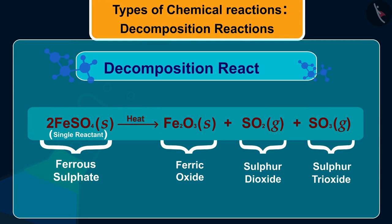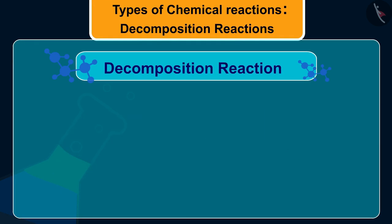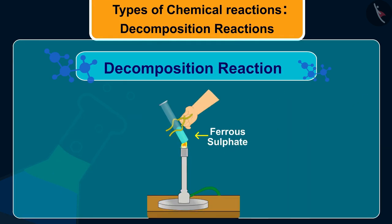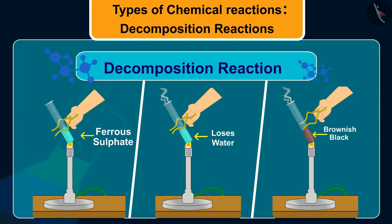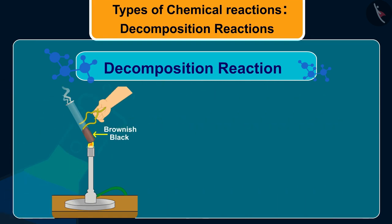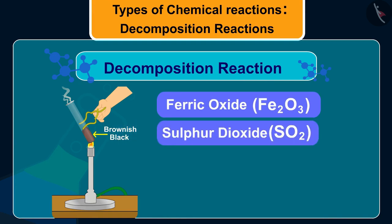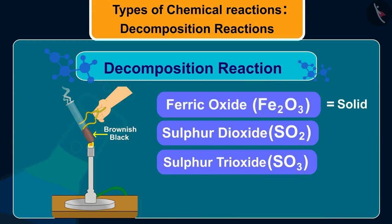Ferrous sulfate crystals FeSO₄·7H₂O lose water when heated and the color of the crystals changes. It then decomposes to ferric oxide Fe₂O₃, sulfur dioxide SO₂, and sulfur trioxide SO₃. Ferric oxide is a solid while SO₂ and SO₃ are gases. Isn't it fun?